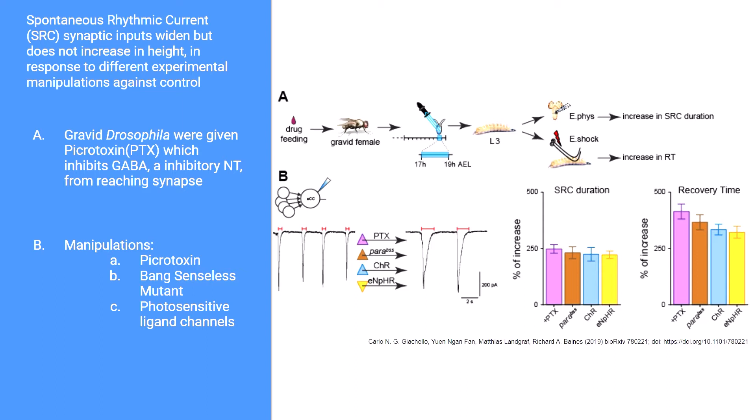The last two experiments made use of channelrhodopsin and halorhodopsin, which are light-sensitive photoreceptors placed into the Drosophila larvae. Each experiment produced the same result: the duration of the SRC increased, but in none of the cases did the amplitude of the SRC increase. It is unknown to the researchers why the amplitude would not increase. My research will try to shed some light on why this phenomenon takes place in the ACC motor neuron. The bar graphs also show that both recovery time of the larvae and the SRC durations are increased over 200 percent when compared to the control across all experiments.